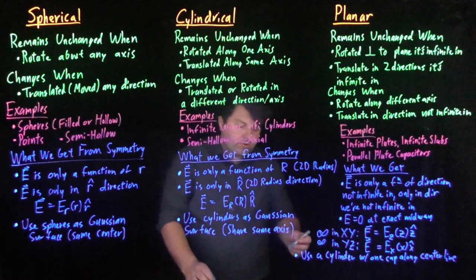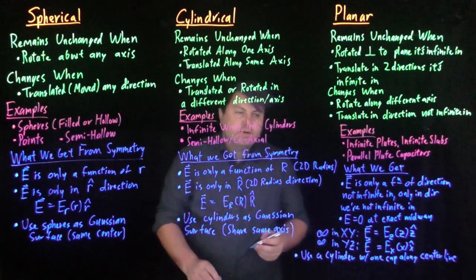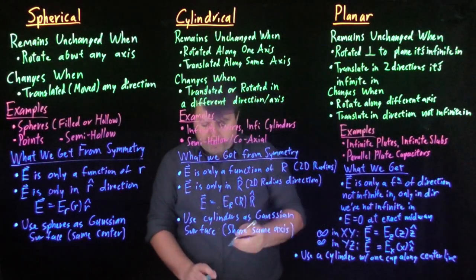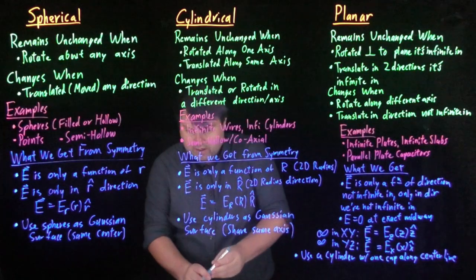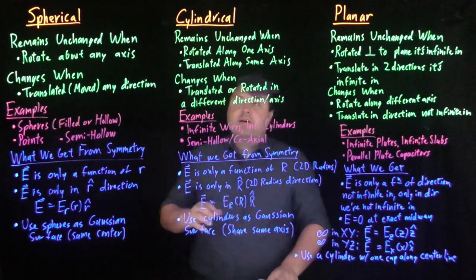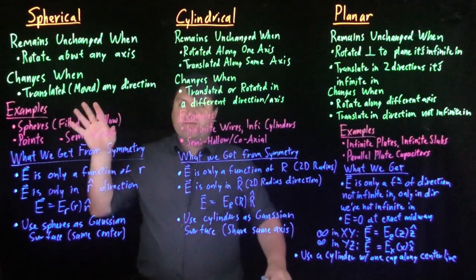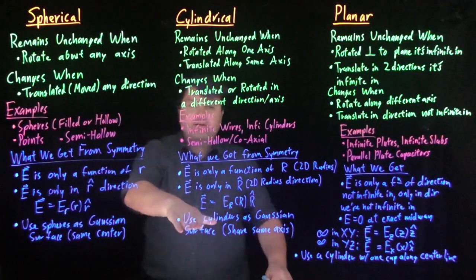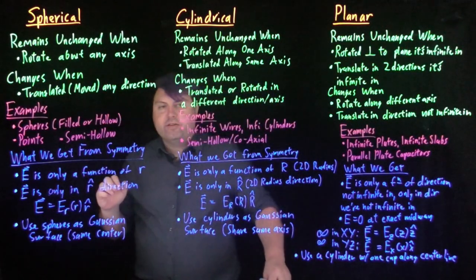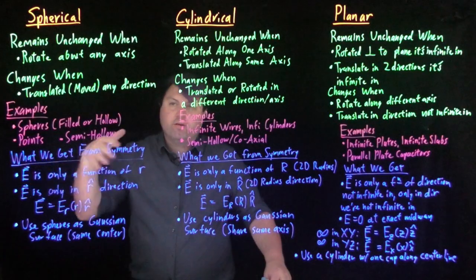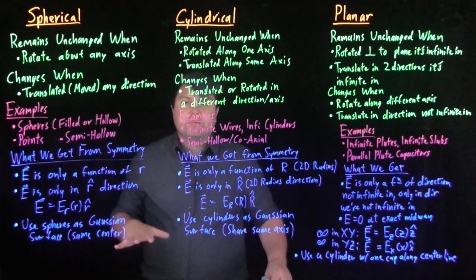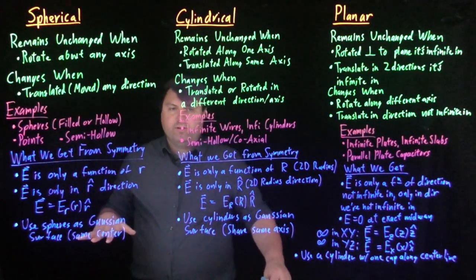In our sketch-organized solve approach, we show a bit more of how to do this with the planar case. This is how to test for which symmetry we have. Once we identify the symmetry, it tells us how to use our Gaussian surfaces and what we get in order to justify where our Gaussian integrals become trivial.